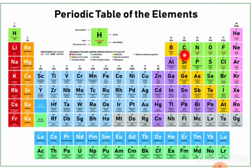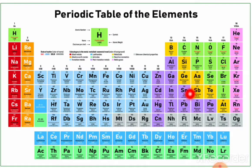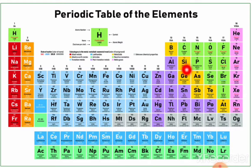Next is group 14, the carbon family: carbon, silicon, germanium, tin, lead. How to remember this? Simple trick: 'Kashi gheshin lead' — carbon, silicon, germanium, tin, lead.